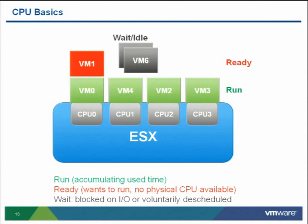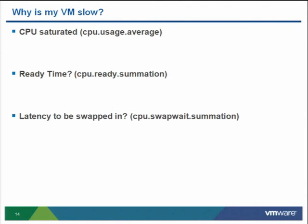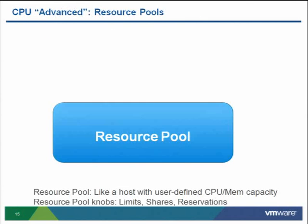Given this understanding of the scheduler, why might a VM be slow due to CPU? If you're running a very CPU-intensive job, you might be saturating the CPU — look at the CPU usage average counter. If a VM really wants to run but there's no physical resource, it accumulates ready time, logged by the CPU ready summation counter. Note that this should be sustained over a period of time rather than just occasional spikes; otherwise it might just be workload variability. If ESX has to load memory pages when scheduling a VM, that's called CPU swap wait.